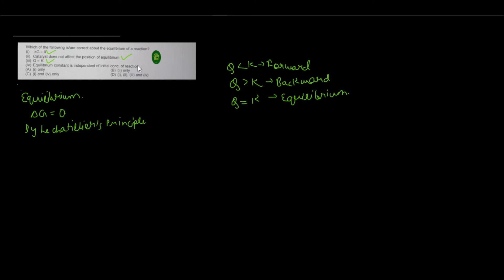The fourth statement says equilibrium constant is independent of initial concentration of reactants. This is also correct — we studied that the equilibrium constant is not affected by the addition or removal of any material in the reactants or products. So all four statements are correct, and the correct option for this question is D. Thanks for watching Chem6 Show — please like, share, and subscribe to the channel.